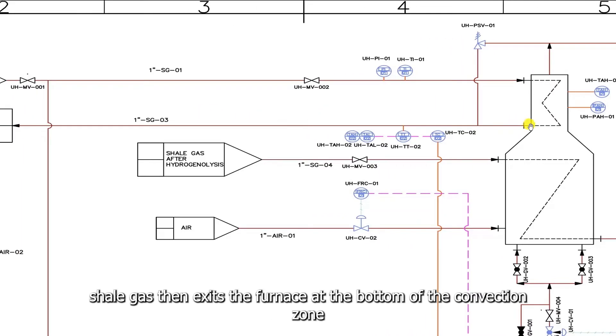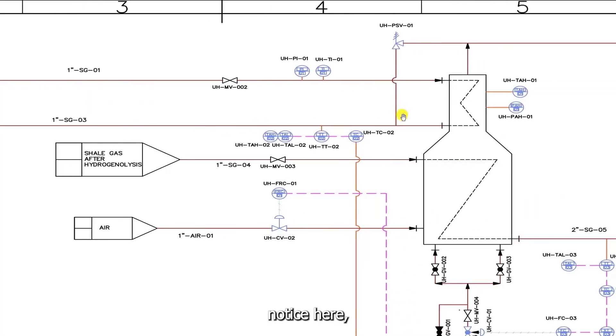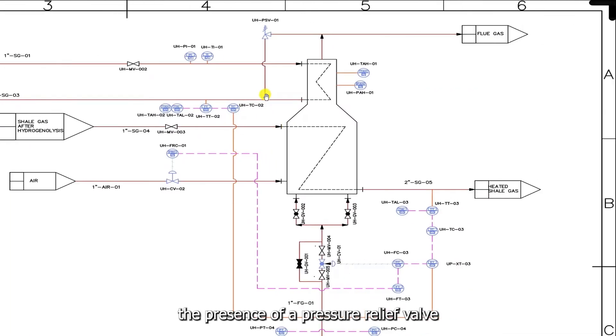The heated shale gas then exits the furnace at the bottom of the convection zone and flows through a one-inch pipe to feed the hydrogenolysis. Notice here the presence of a pressure relief valve. This is a safety device which in case of overpressure will pop fully open to relieve excess gas to the flue gas piping network.